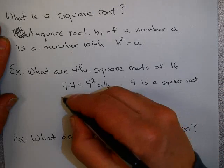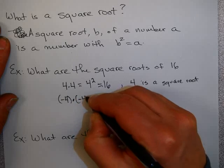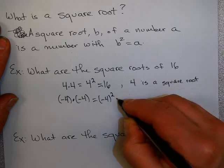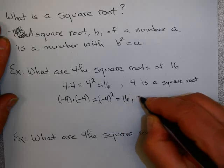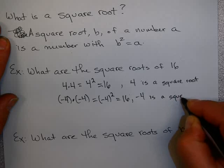And, by the way, also negative 4. Negative 4 times negative 4, or negative 4 squared, is also 16. So negative 4 is a square root of 16.